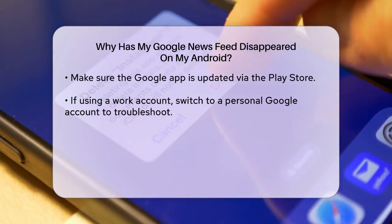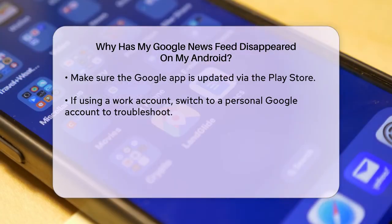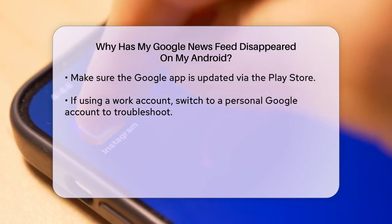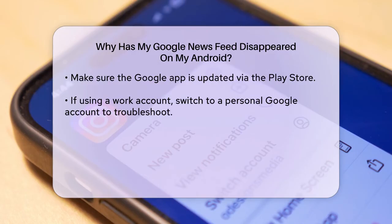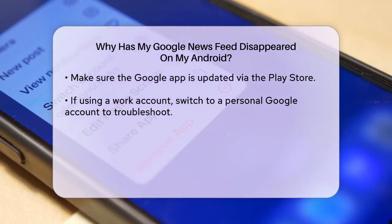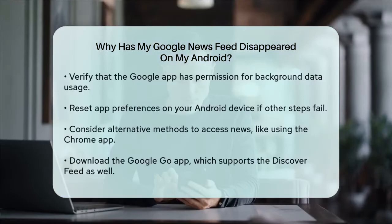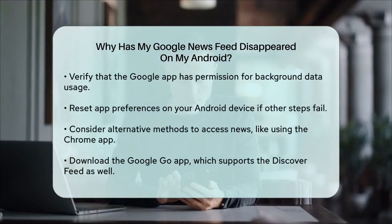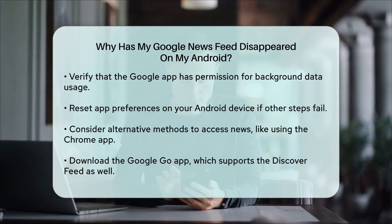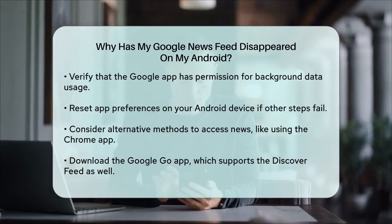Check your data usage settings. Ensure that the Google app has permission to use data in the background. Go to Settings, then to Apps, find the Google app, and check the data usage or mobile data and Wi-Fi settings. Make sure the background data toggle is turned on.